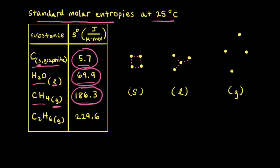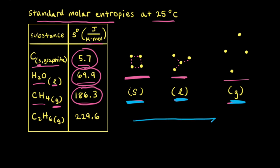This trend relates to the number of microstates available to solids, liquids, and gases. Solids are held together by chemical bonds or intermolecular forces, liquids by intermolecular forces, and ideal gases have no intermolecular forces between particles. Going from solid to liquid to gas, there is an increase in the possible arrangements of particles and an increased freedom of movement, meaning more possible microstates and therefore an increase in entropy.